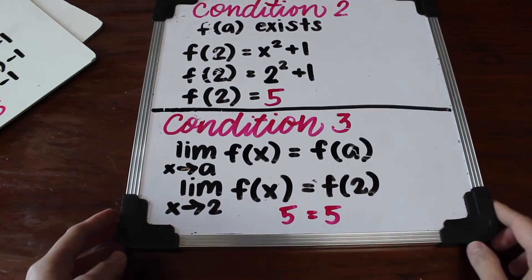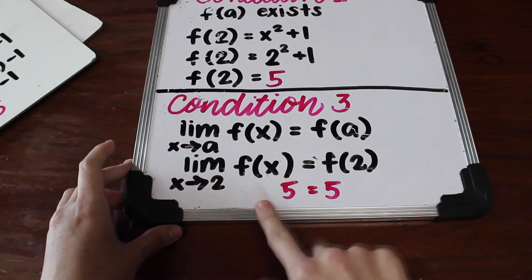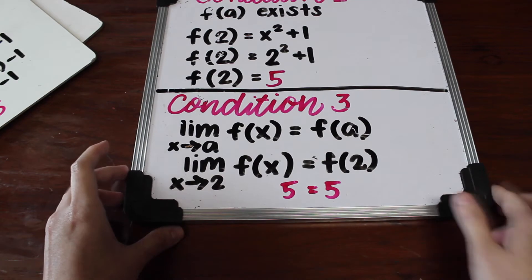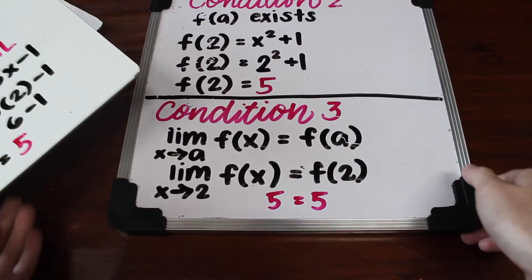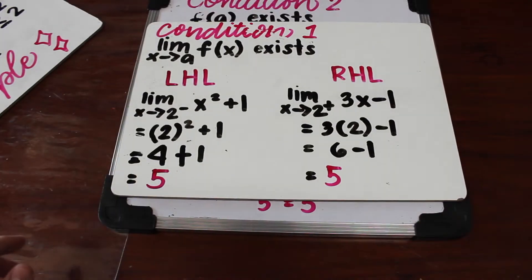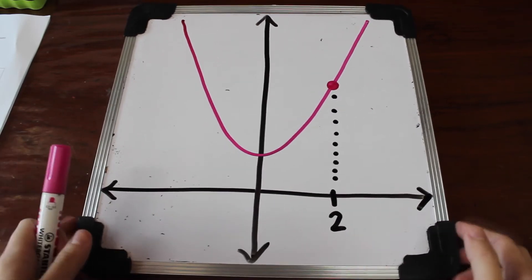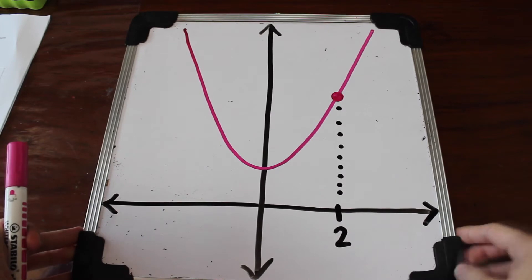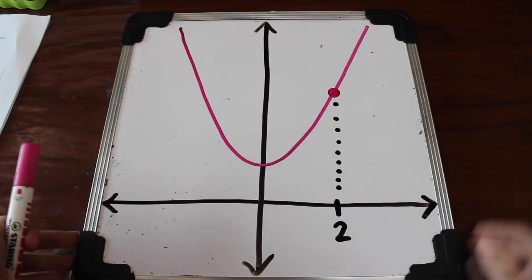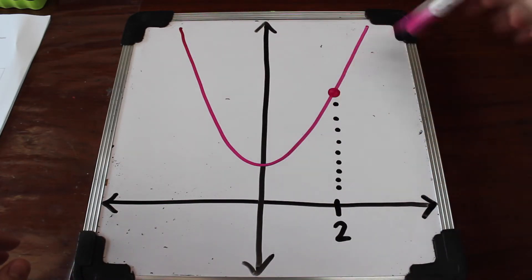For condition 3, we need to confirm the limit of f of x equals f of a. Since both equal 5, all three conditions are satisfied, so it is a continuous function. To better illustrate this piecewise function, here is the graph — it's a parabola, and as you can see, you don't even need to lift your pen while graphing it, so it's continuous.